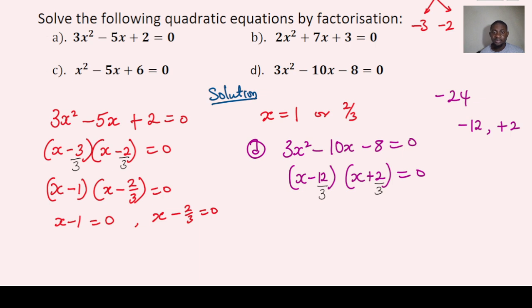So this becomes x - 4. And this is x + 2/3 equals to 0.